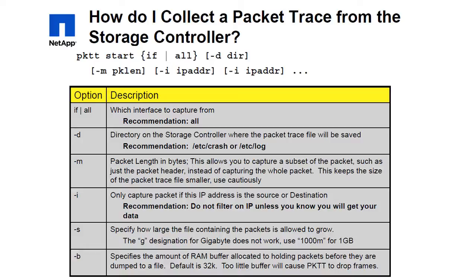For example, if you are working on a CIFS connection problem, you want all IP addresses — not just the storage controller and the client, but also things such as the storage controller talking to the DC in order to get authentication.